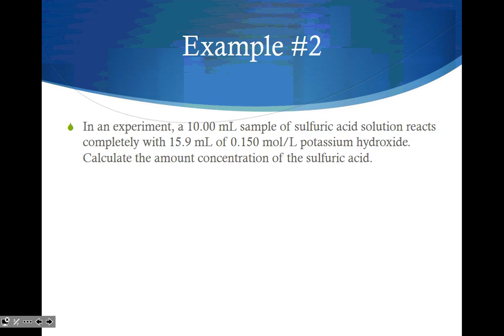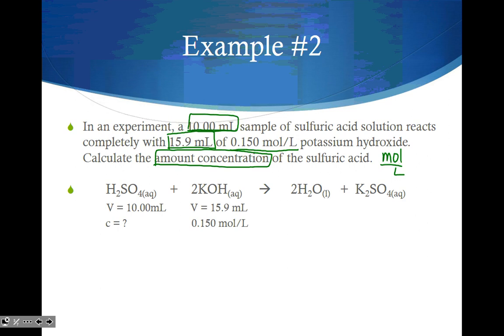Now, our next example is how to find concentration. In an experiment, a 10 milliliter sample of sulfuric acid solution reacts completely with 15.9 mL of 0.150 mol/L potassium hydroxide. Calculate the amount concentration, which just means moles per liter, of the sulfuric acid. Now, notice these two volumes. They're both in milliliters. In this case here, I don't need to convert, because they're going to cancel out. So I have my balanced equation. I'm going to populate my equation. I am looking for the concentration of the sulfuric acid, and I have the volume, and I have the concentration for the potassium hydroxide. It's a two to one ratio. Take a look. This volume here is in milliliters. This volume here is in milliliters. Cool. I don't have to change it, because they're going to cancel out.